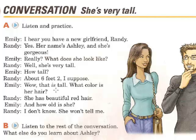'About six feet two' — 'seis pies y dos pulgadas.' 'I suppose' — 'supongo.' 'Wow, that is tall' — 'eso es alto.' 'What color is her hair?' — 'De qué color es su cabello?' 'She has beautiful red hair' — 'tiene el cabello rojo.' 'How old is she?' — 'Cuántos años tiene ella?' 'I don't know — she won't tell me.' 'Won't' is the negative future — 'no me dirá.'